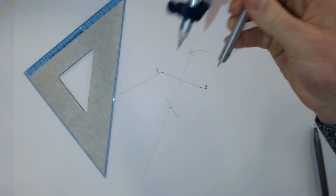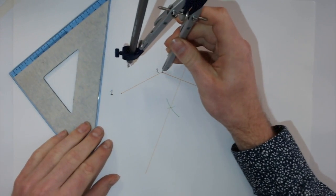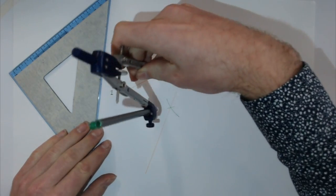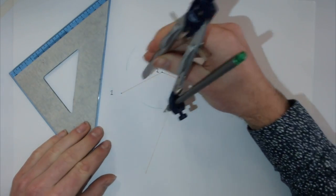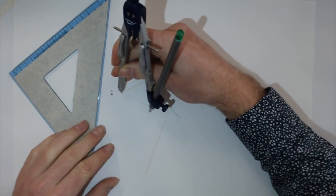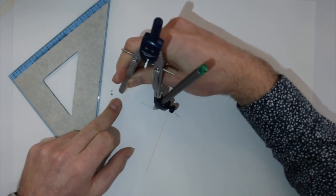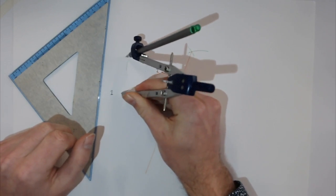Take the compass, place it on point two, and scribe two arcs. Then place it on point one and scribe two more arcs.